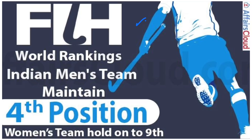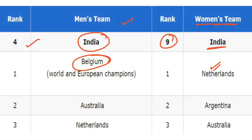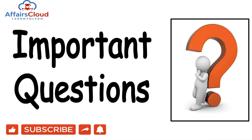Important information: in the International Hockey Federation world rankings, India's men's team maintained fourth position and the women's team holds ninth position. Belgium leads the men's rankings and the Netherlands leads the women's rankings. The International Hockey Federation was established in 1924, its headquarters is in Lausanne, Switzerland, and its president is Narendra Batra.